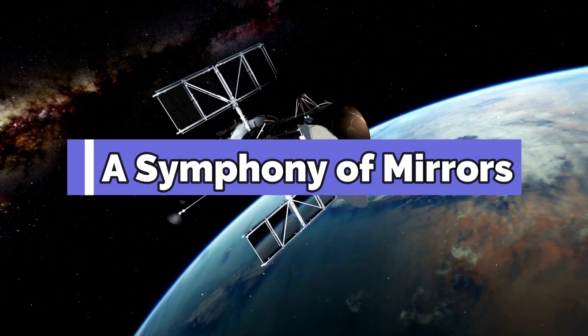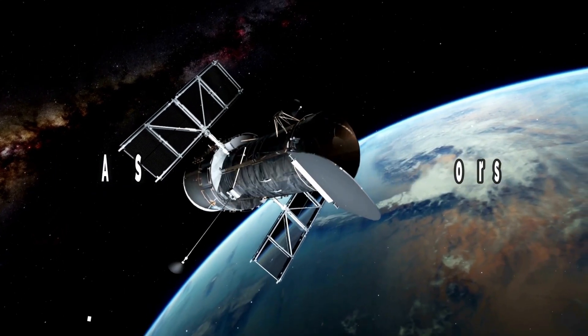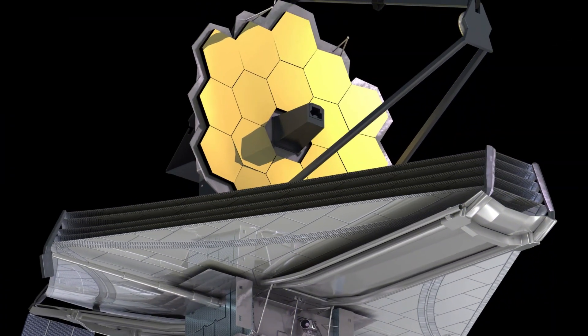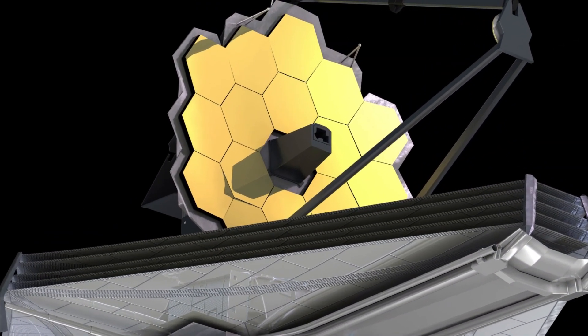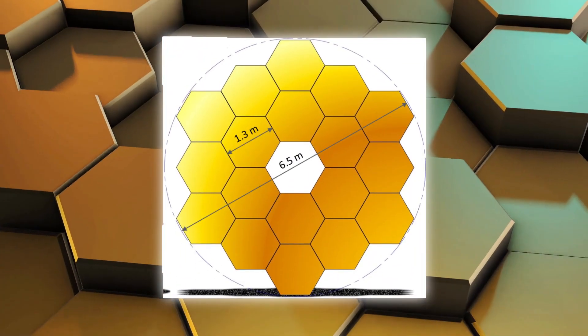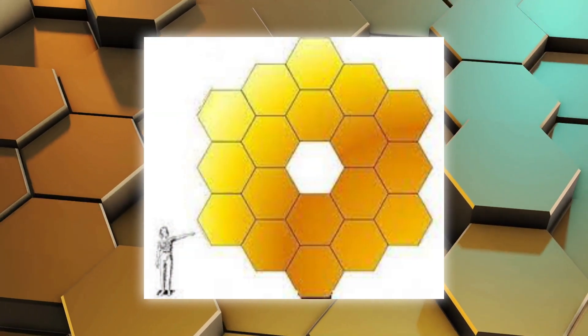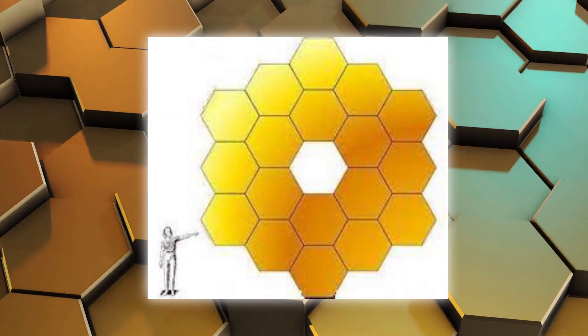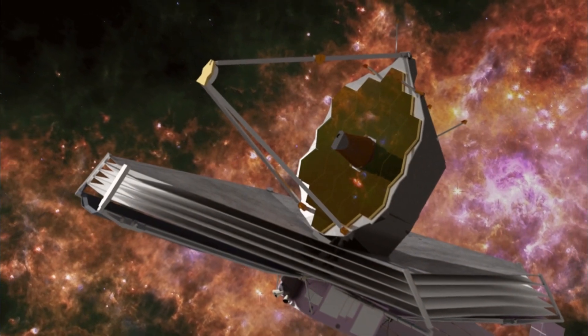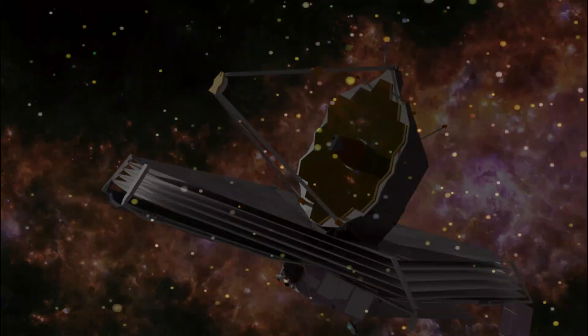A symphony of mirrors. Webb's primary mirror is an engineering marvel. Comprised of 18 hexagonal segments, each coated with a thin layer of gold, it spans an impressive 21.3 feet. These mirror segments work in perfect harmony to create a crystal clear view of the cosmos.